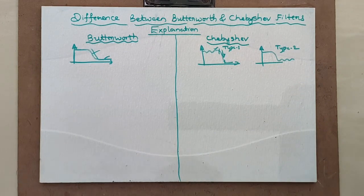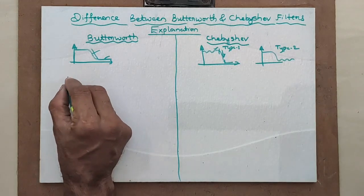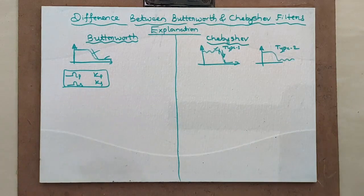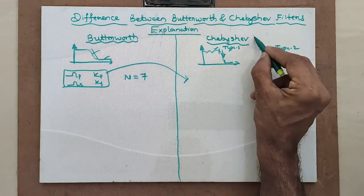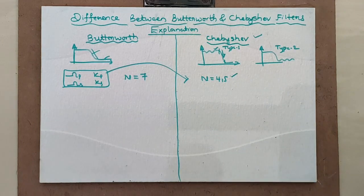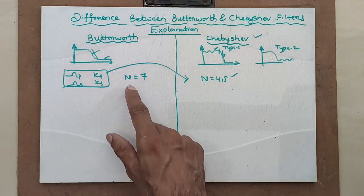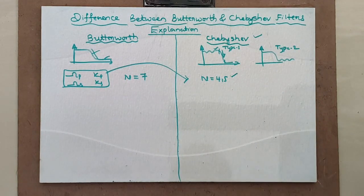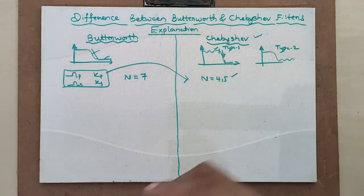The third difference: for a given specification, a Butterworth filter needs a higher order. For example, given Ω_P, K_P, Ω_S, and K_S, a Butterworth design might yield N = 7, whereas a Chebyshev design for the same specifications may give N = 4 or 5. This means Chebyshev filters have a lower order, requiring less hardware — fewer registers, capacitors, and operational amplifiers — making implementation easier and more advantageous.